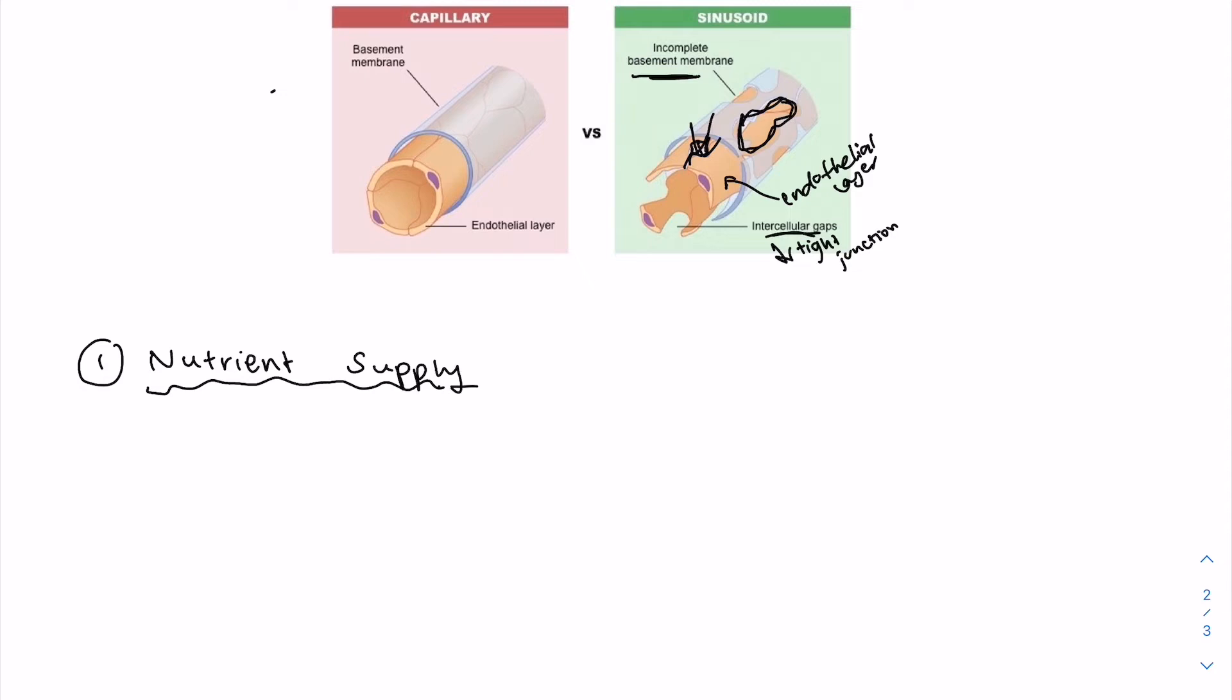So let's get back to those four functions of the liver. Firstly, we have nutrient supply. So the liver converts nutrients into forms that can be stored or used and mediates their transport to various tissues around the body. So firstly, there's carbohydrate metabolism.